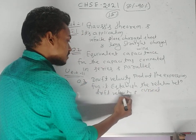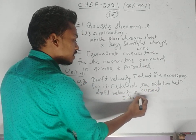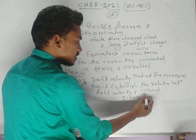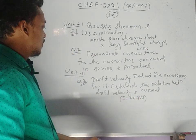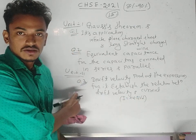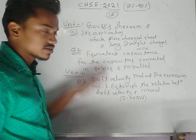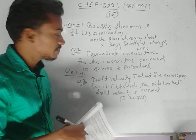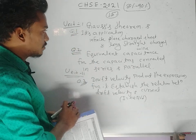The relation to establish is I = neAv. This is your first important long question from current electricity. Then question number four follows.